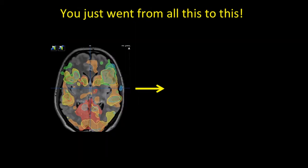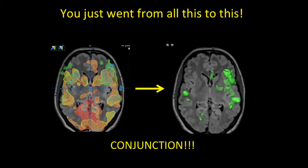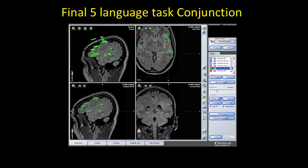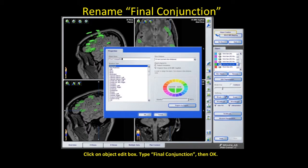We just went from all five language tasks overlapping to, with our conjunction analysis, intersection, and advanced manipulation in Brain Lab, only the areas that are essential or common to all those language tasks. You can easily see that this patient with a left cortical dysplasia of the Perisylvian-Wernicke area is definitely left language dominant. This is our final five-language-task conjunction 3D object in green. Rename it — click open edit box, type in 'final conjunction,' and hit OK.